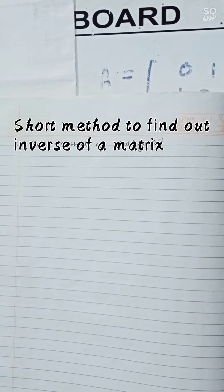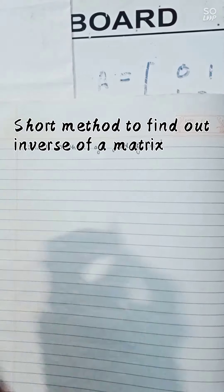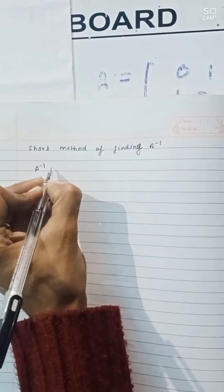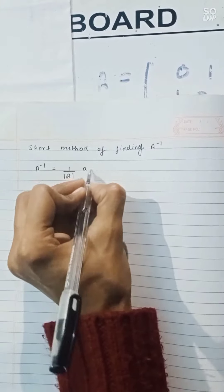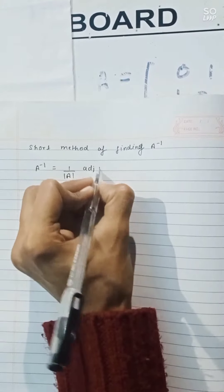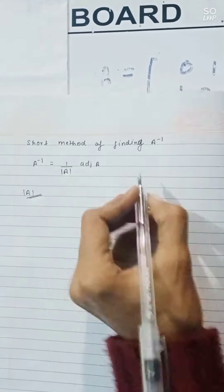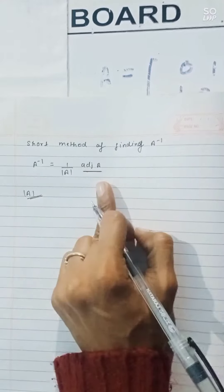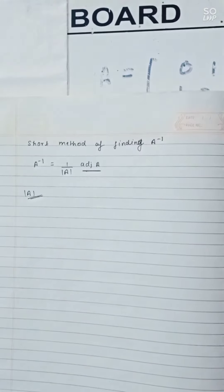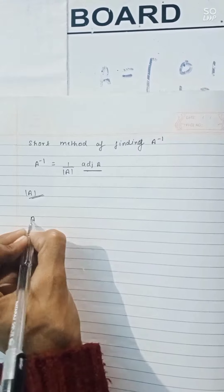Today we will discuss the shortcut method of finding A inverse. As we know, the formula is A inverse equals 1 upon mod of A multiplied by adjoint of A. We all know how to find mod of A, so we will talk about the shortcut method of finding adjoint of A.